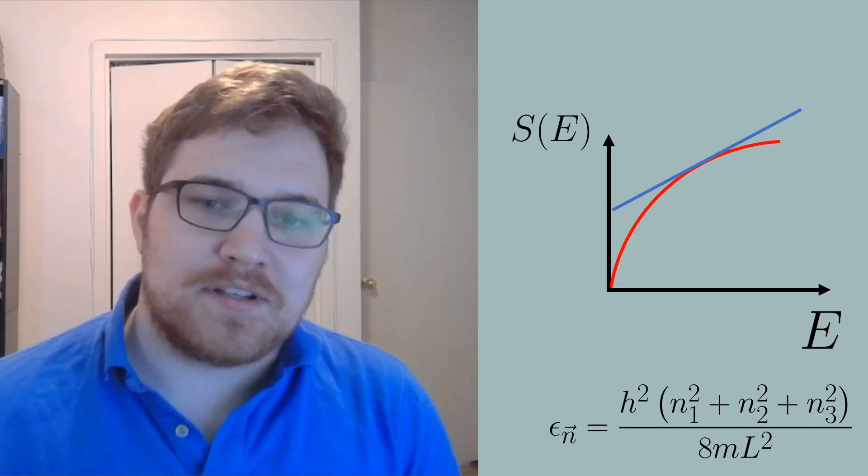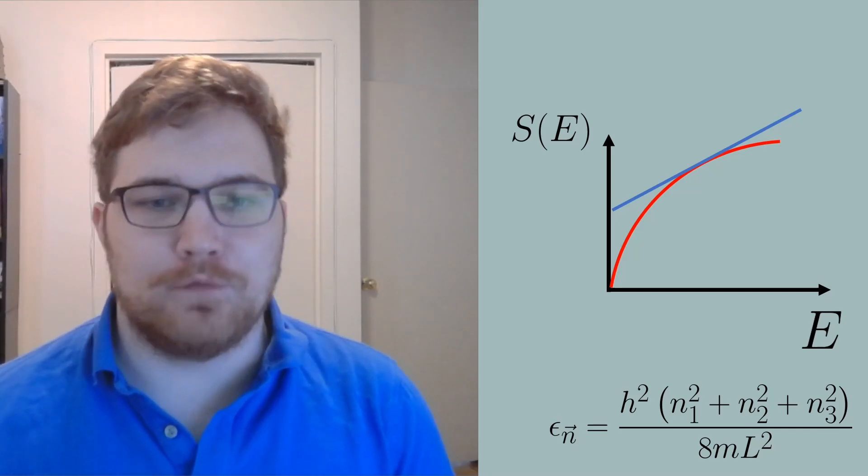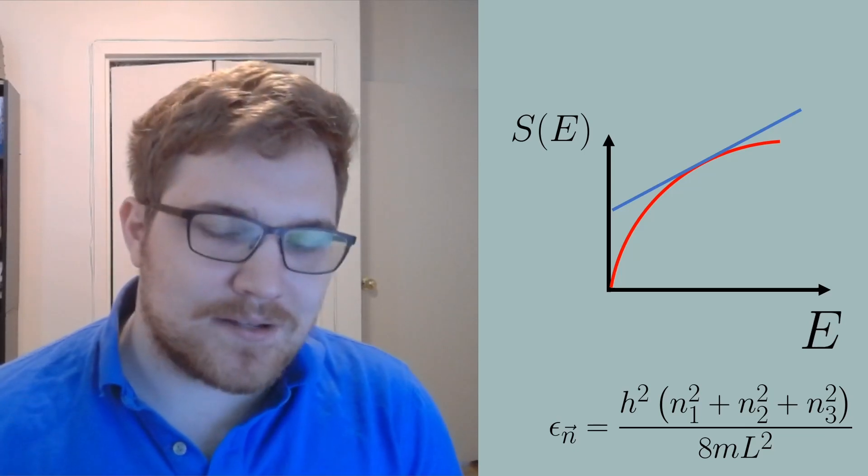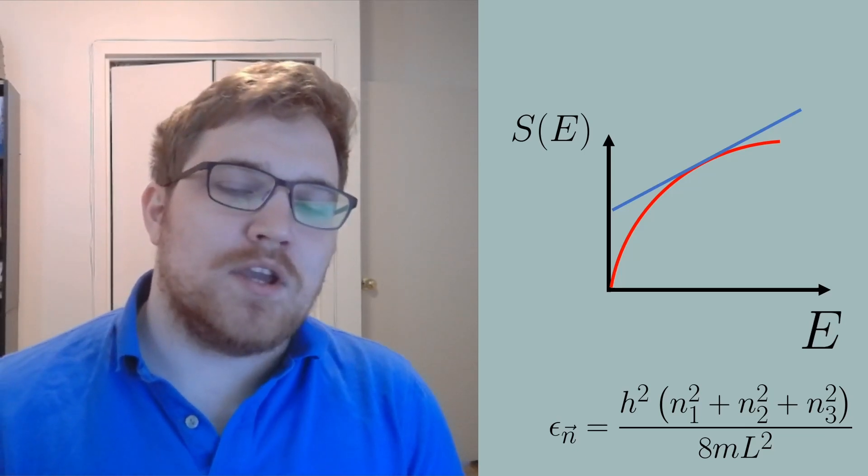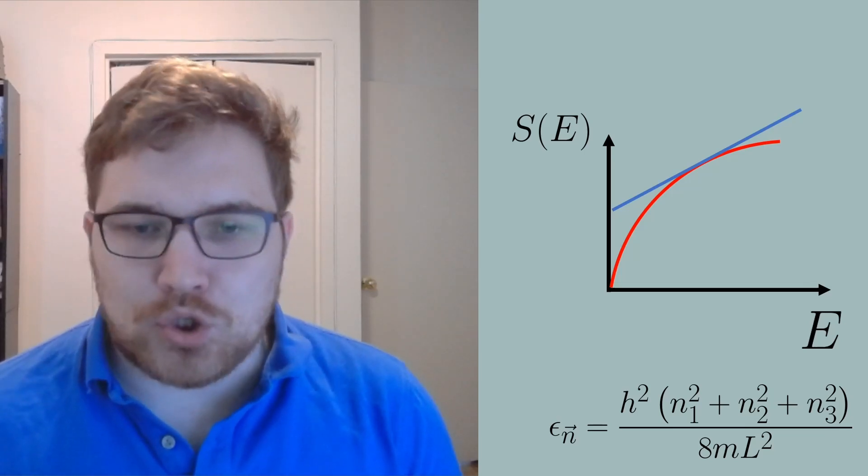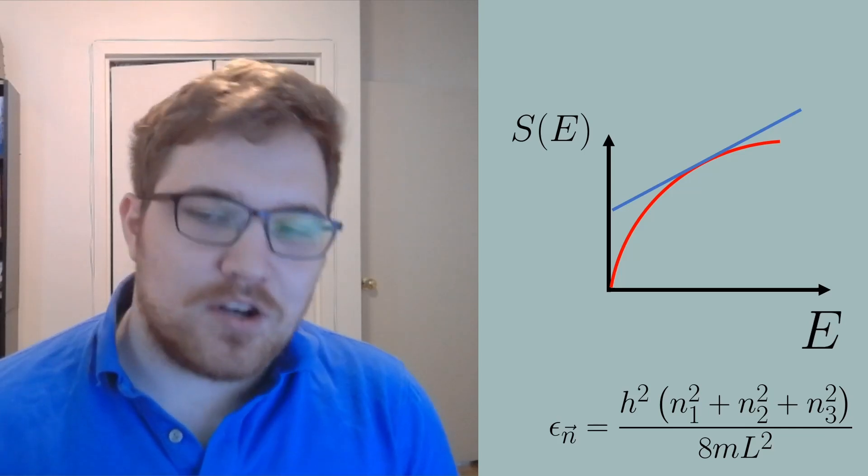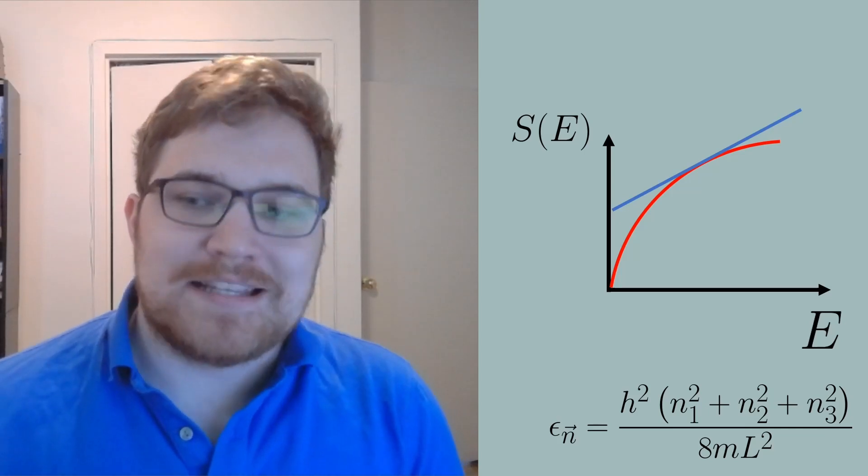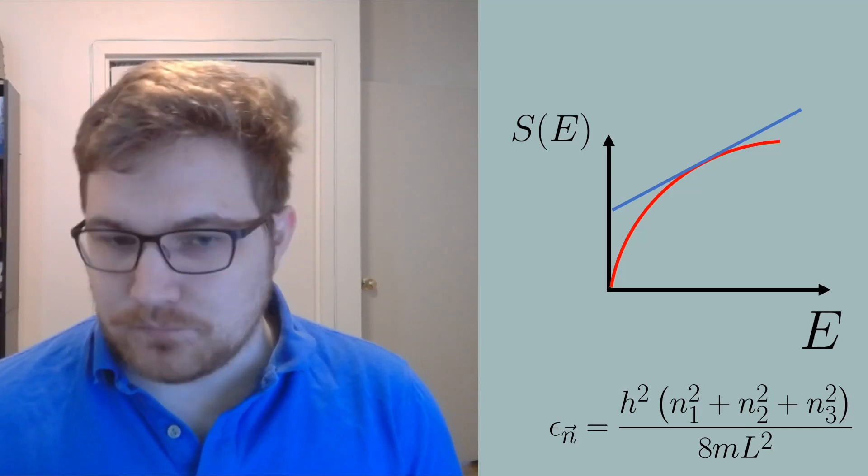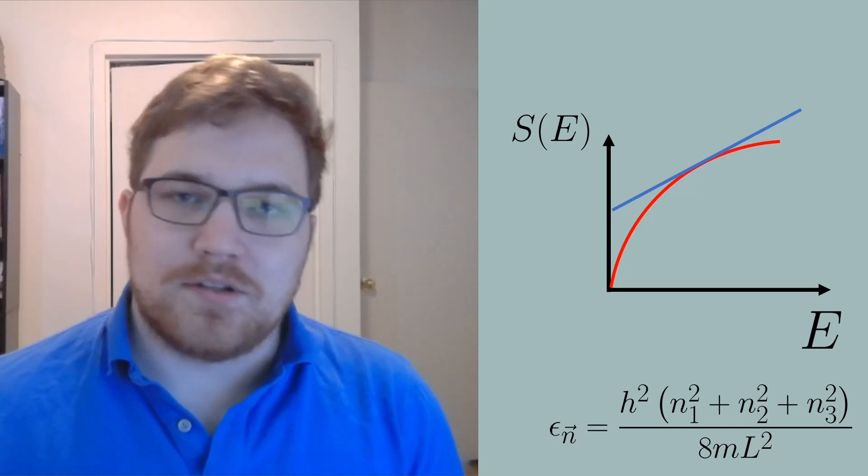We know that the energy of a single particle in a cubic box with lengths L is given by the following formula. Here h is Planck's constant, m is its mass, and n1 through n3 are natural numbers labeling the different energies. If we imagine a large number of these particles in a box forming a gas, the number of ways one can distribute a given energy over all of these particles is usually quite big. The bigger the energy, the larger the number of choices we have.